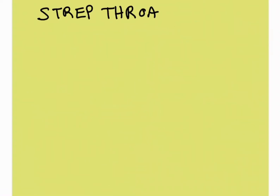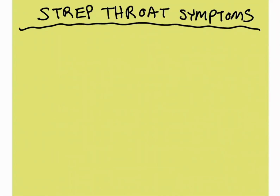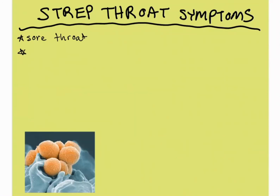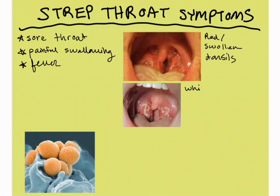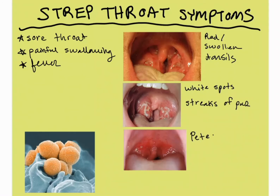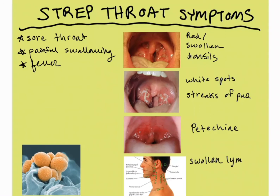Streptococcal pharyngitis symptoms can include a sore throat, fever, and pain when swallowing. If the patient still has their tonsils, they'll be red and swollen, and they might have white spots or streaks of pus on them. Some patients will also have petechiae, or red little dots on the top of the roof of the mouth, which is pretty characteristic of strep throat. They might also have swollen lymph nodes in the front of their neck.